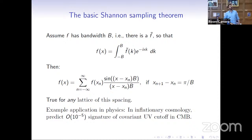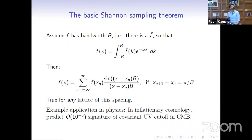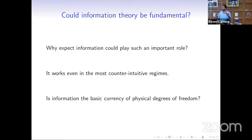This can be applied to physics, for example to inflationary cosmology, where under the assumption of a covariant Planck-scale cutoff, you can calculate the impact on CMB fluctuations. What you find is an impact of order 10 to the minus 5 — very hard to measure, but maybe not impossible. But this was just an example of the first attitude, using information theory as a provider of tools for quantum gravity.